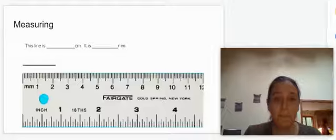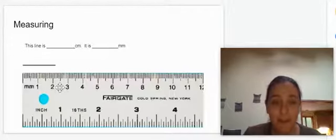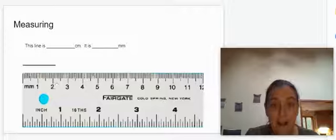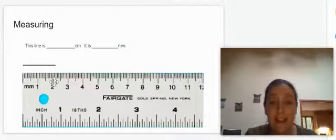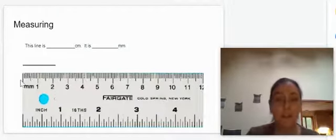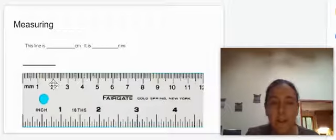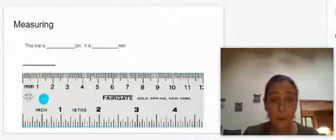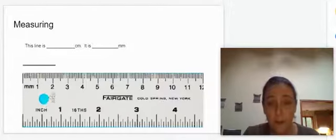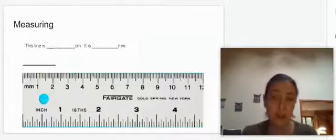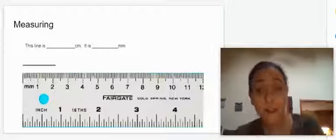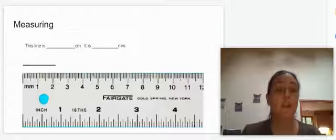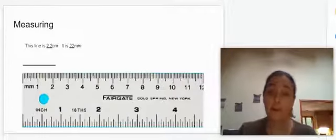Let's do one more. This one doesn't go to the two and it doesn't go to the midline. It actually goes to the second little line after the two. It starts at the zero, but then goes to the two and then two little lines after that. So how many centimeters do we have there? We've got one, two centimeters, and then we have these two little lines after. How do we represent that numerically? 2.2 centimeters, which is equal to 22 millimeters.